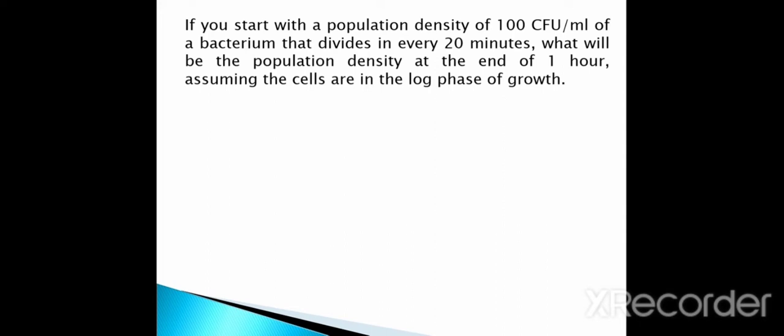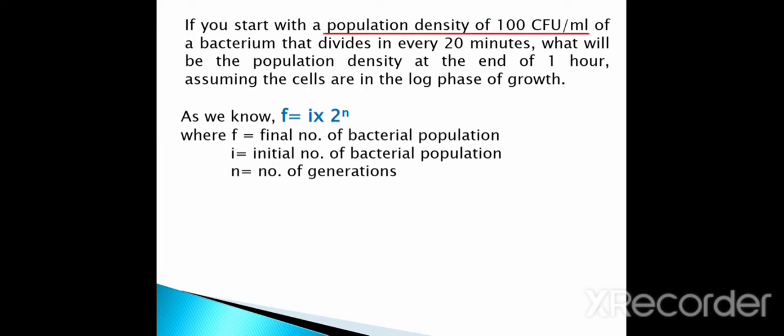To solve this question, we have to consider the formula F = I × 2^n, where F is the final number of bacterial population, I is the initial number of bacterial population, and n is the number of generations. Here the initial number of bacterial population is 100 CFU per ml. CFU means colony forming unit.